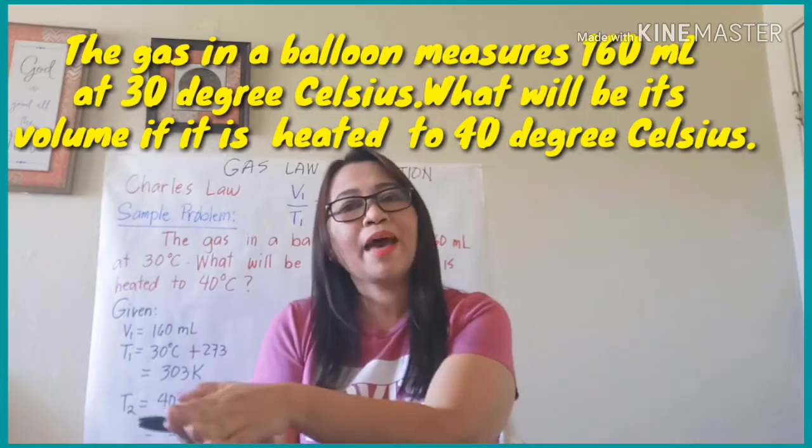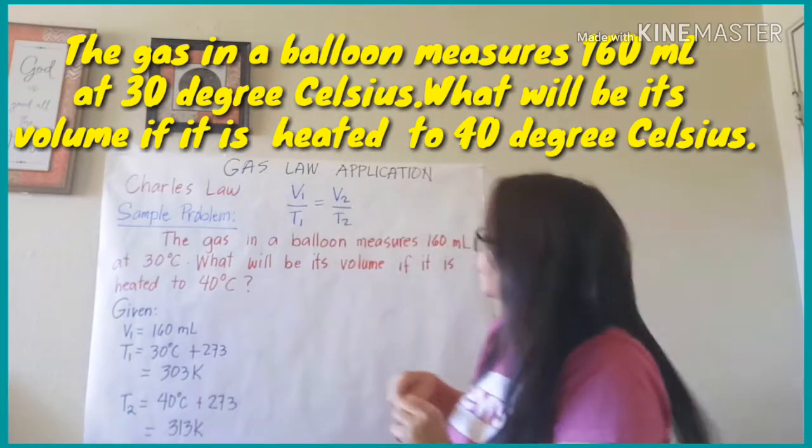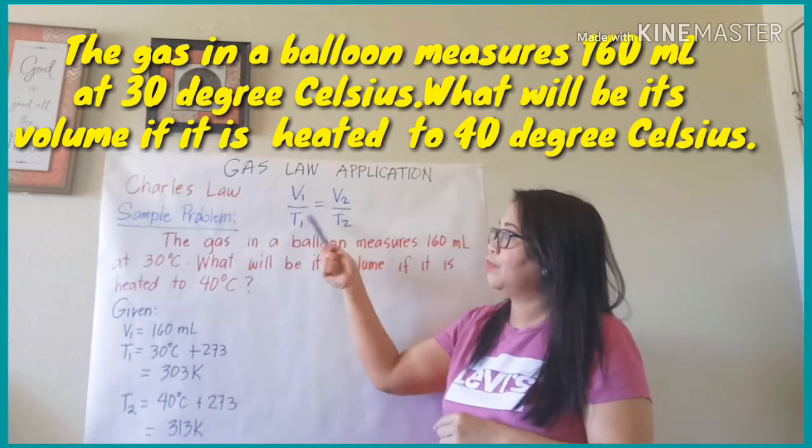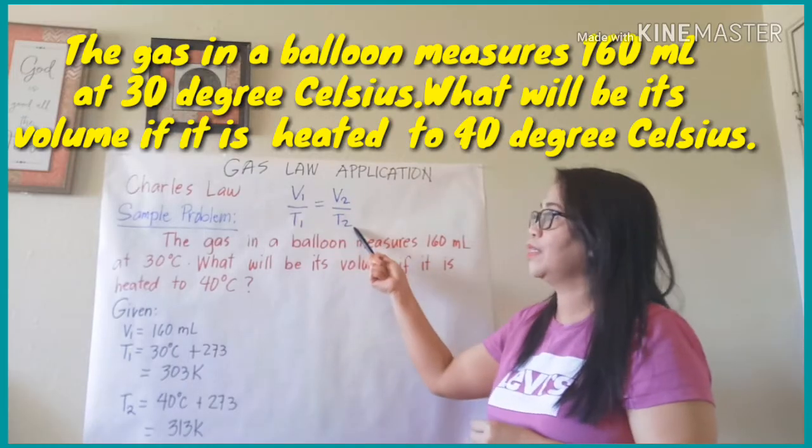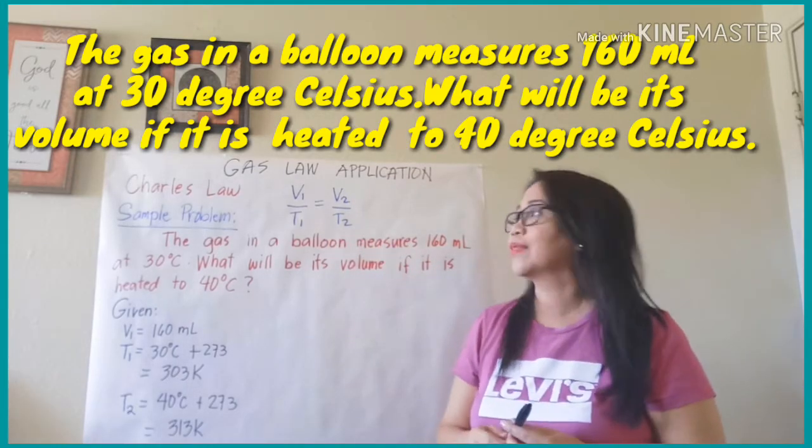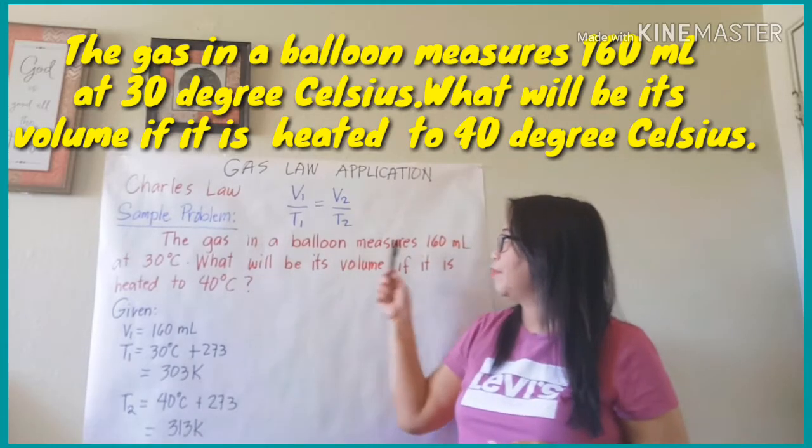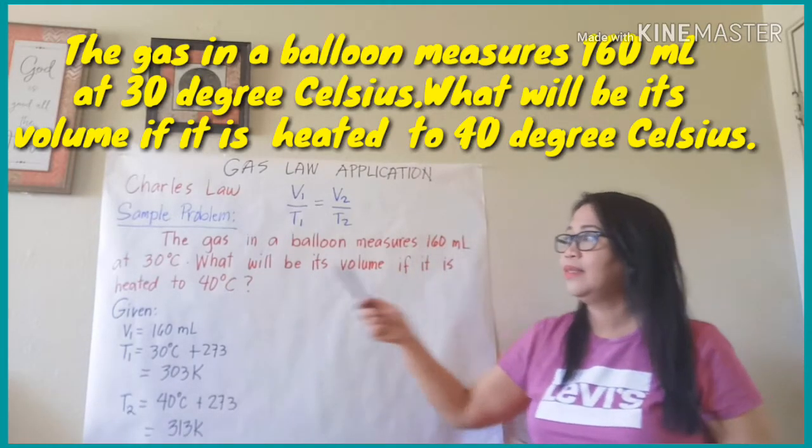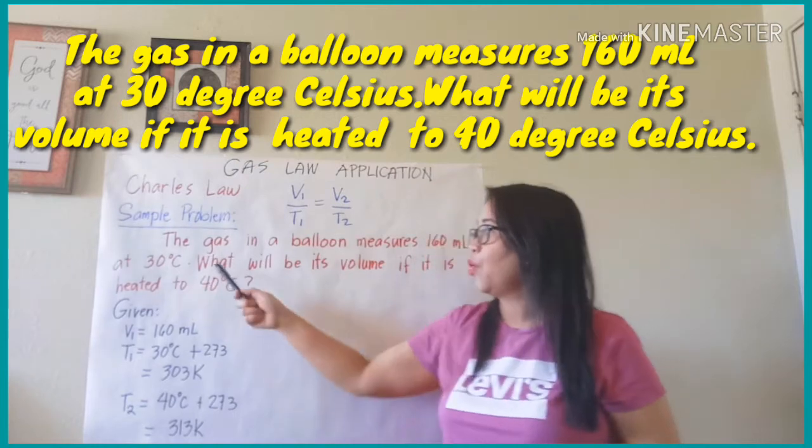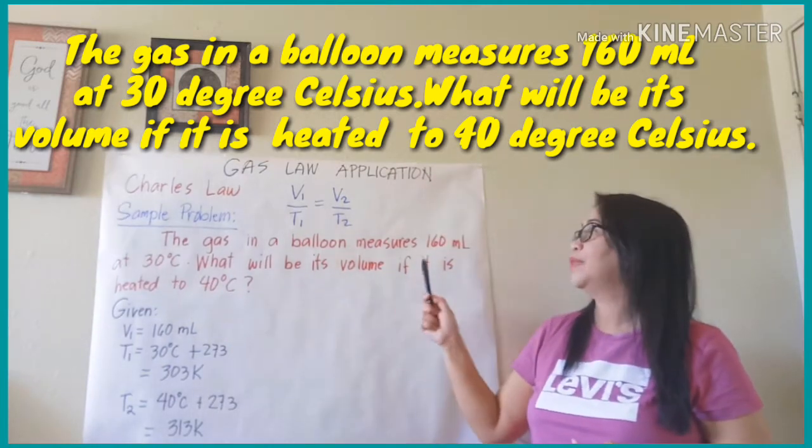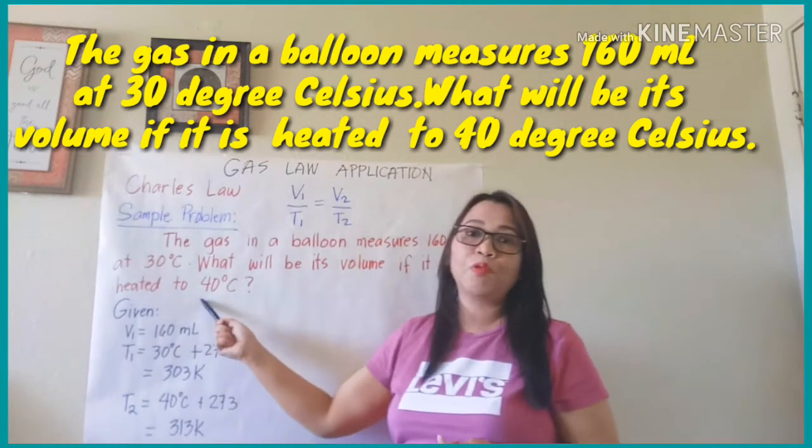All right, so this time let's have the application of Charles Law. Charles Law is V1 over T1 equals V2 over T2. That's the general equation for Charles Law. Now let's have a sample problem: The gas in a balloon measures 160 ml at 30 degrees Celsius. What will be its volume if it is heated to 40 degrees Celsius?